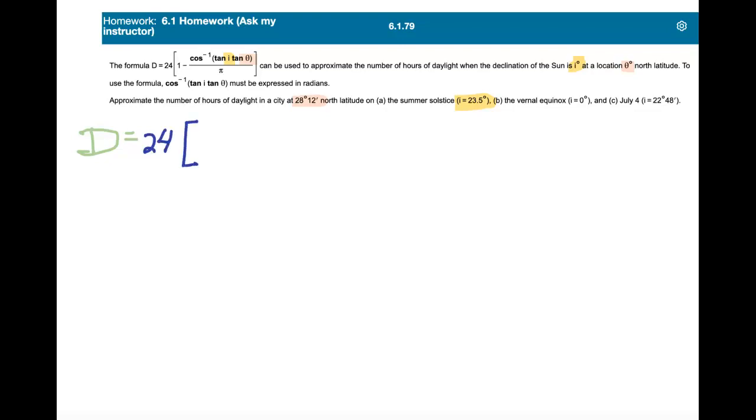times 1 minus the inverse cosine of the tangent of I, which in the first case is 23.5 degrees,